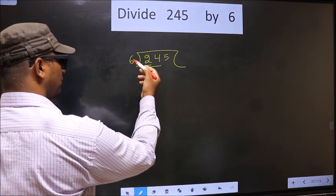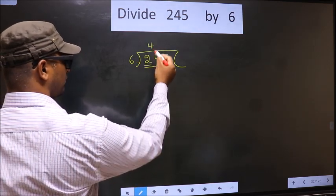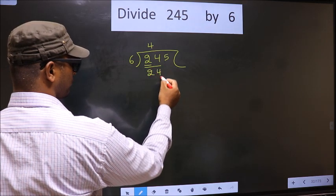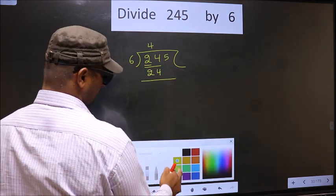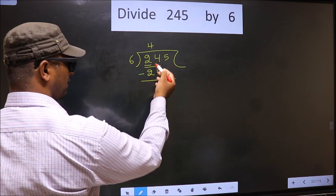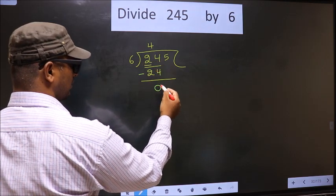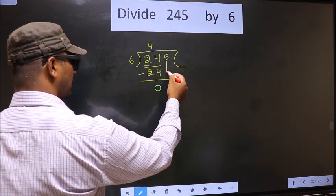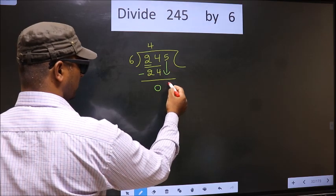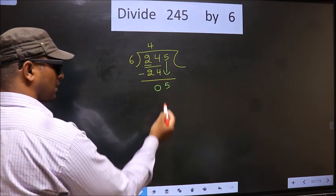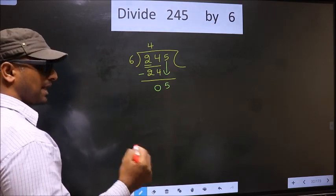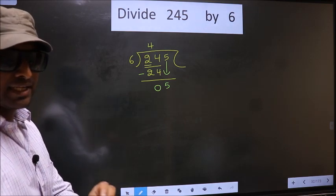When do we get 24 in 6 table? 6, 4 is 24. Now, you subtract. 24 minus 24 is 0. Now, we bring down the beside number that is 5 down. Now, this is where the mistake happens. And the mistake is this.